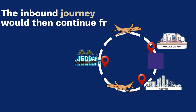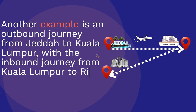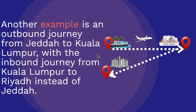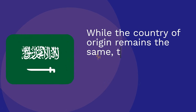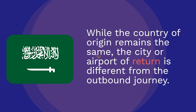The inbound journey would then continue from Singapore back to Jeddah. Another example is an outbound journey from Jeddah to Kuala Lumpur, with the inbound journey from Kuala Lumpur to Riyadh instead of Jeddah. While the country of origin remains the same, the city or airport of return is different from the outbound journey.